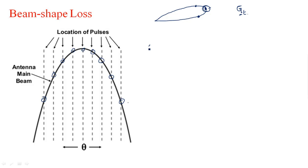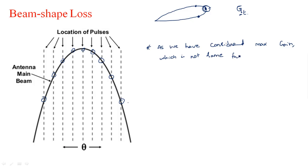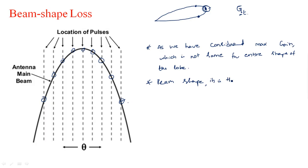Because we have considered the maximum gain, which is not the same for the entire shape of the lobe, the gain varies depending upon the different positions within the beam shape. This is the beam shape loss. We cannot change this because the shape of the beam cannot be varied.